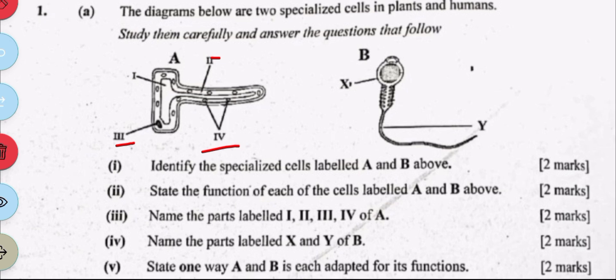So part IV is asking us to label the parts of B. So X is the head and Y is the tail. And lastly, state one way A and B is each adapted to its function.